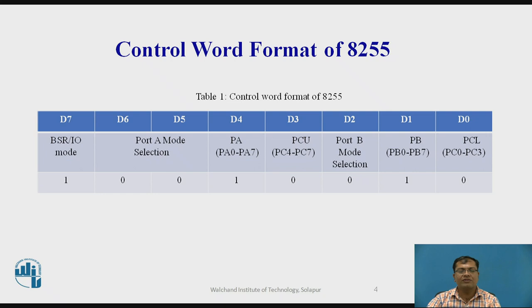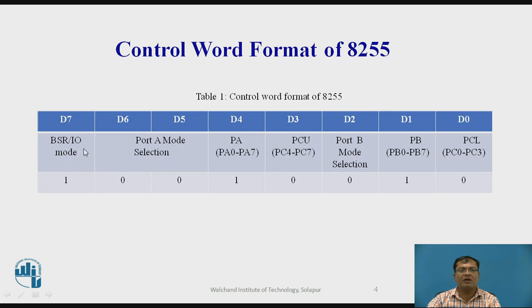Before that, we should know how the control word format of 8255 works. It has a total of 8 bits, D0 through D7. Port C lower part (PCL) is at D0, Port B is at D1 and D2, Port C upper is at D3, Port A is at D4, and D6 is for mode selection of Port A.